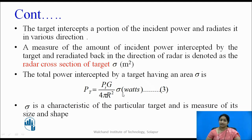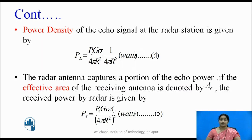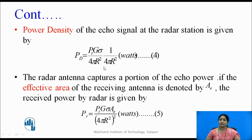The cross-sectional area sigma is a characteristic of the particular target — it depends on the target's size and shape, and its value changes accordingly. The power density of the echo signals received at the radar station is given by Pd = Pt × G × σ / (4πr²) × 1/(4πr²), since the signals travel the same distance back, so 1/(4πr²) is again multiplied in the power density equation.